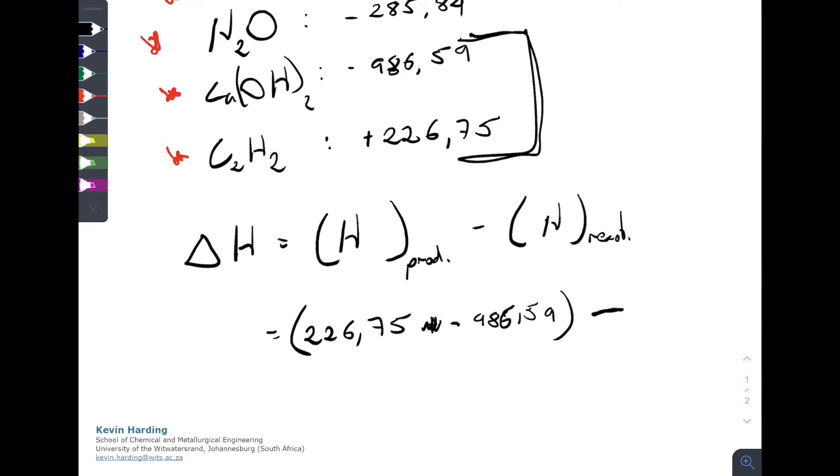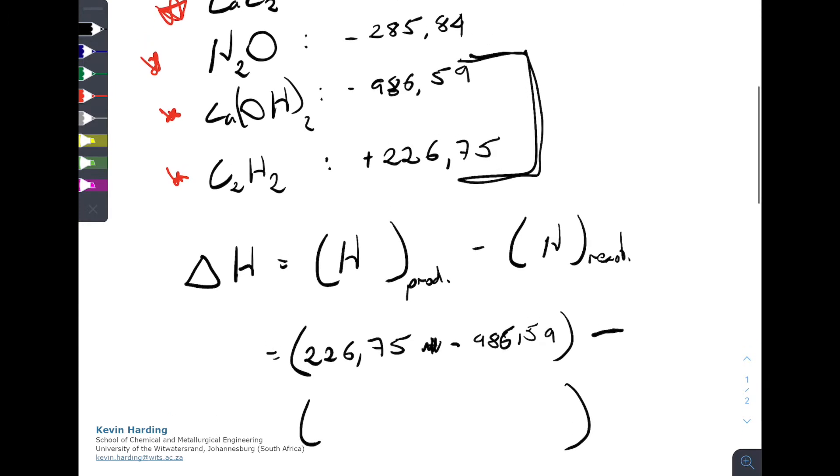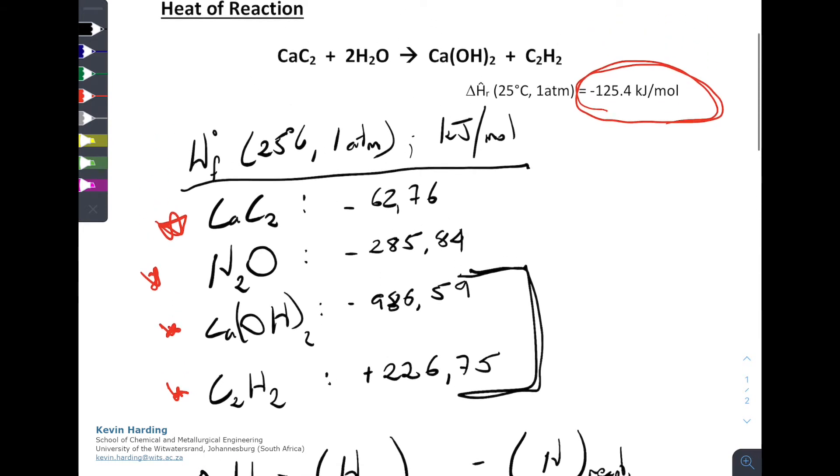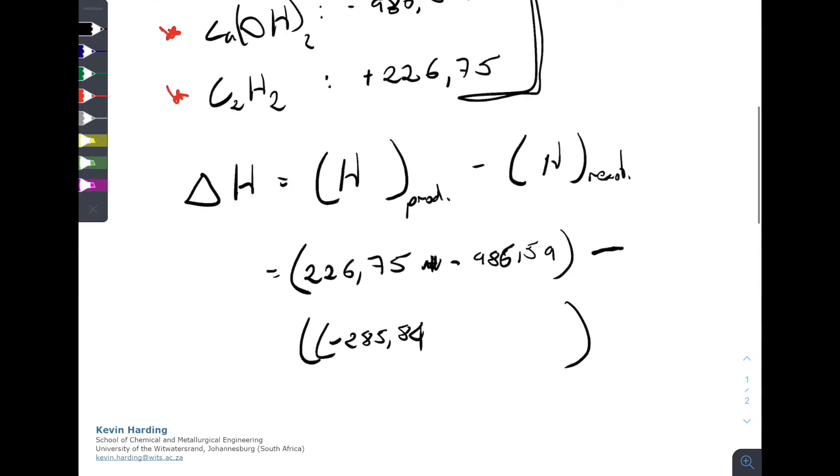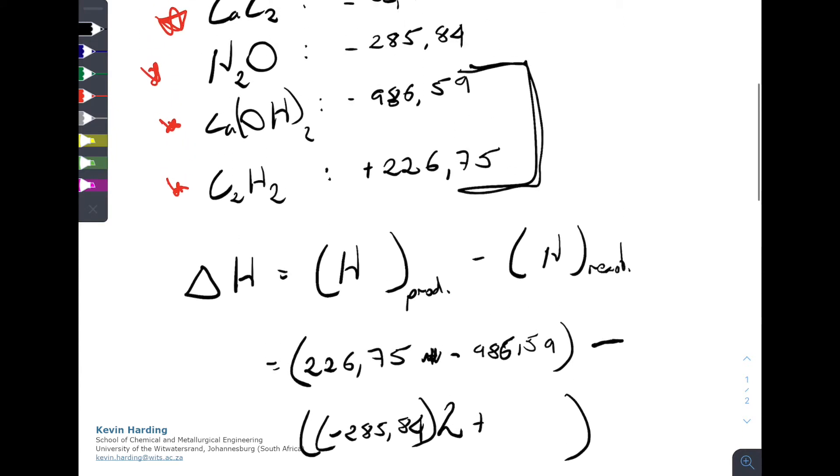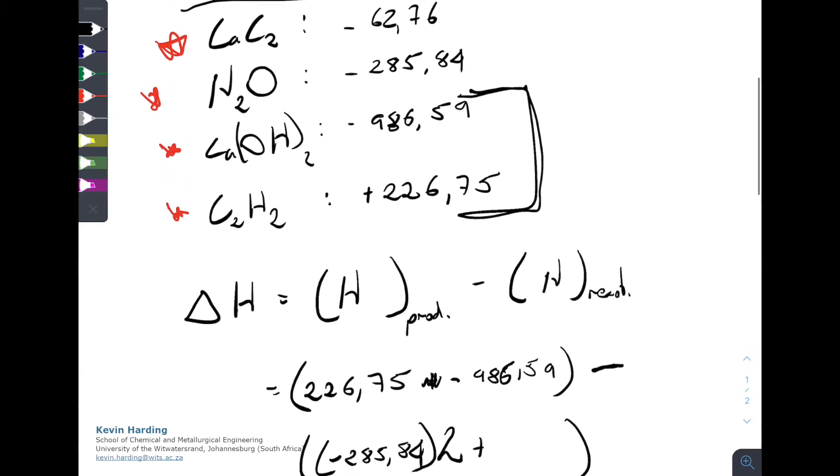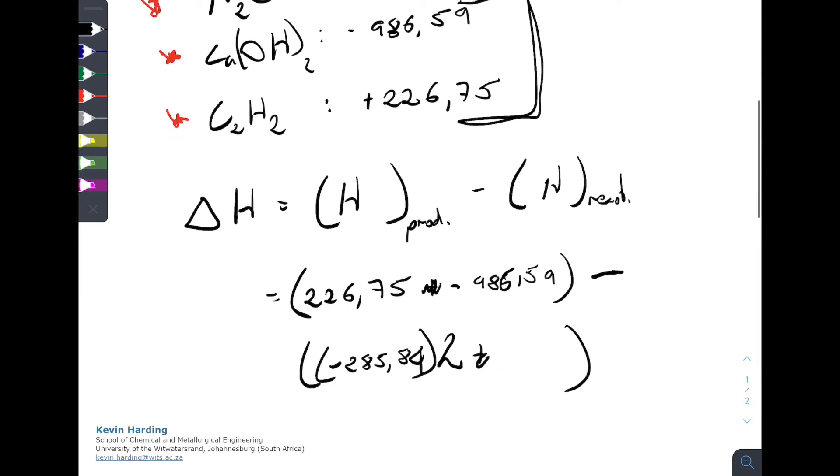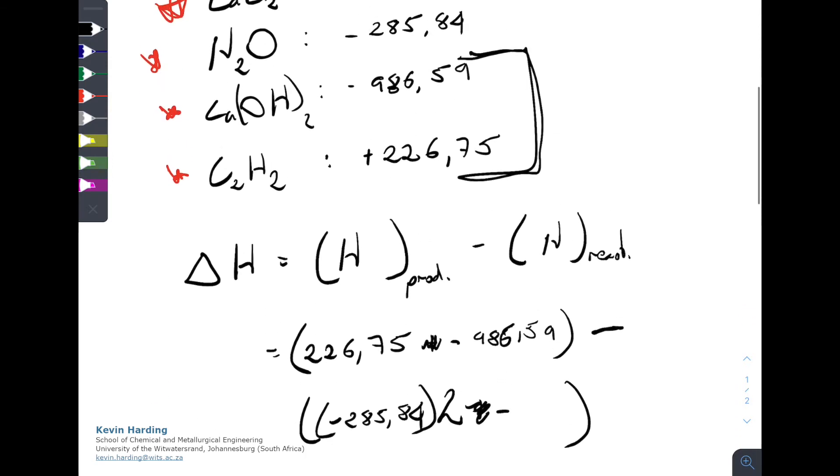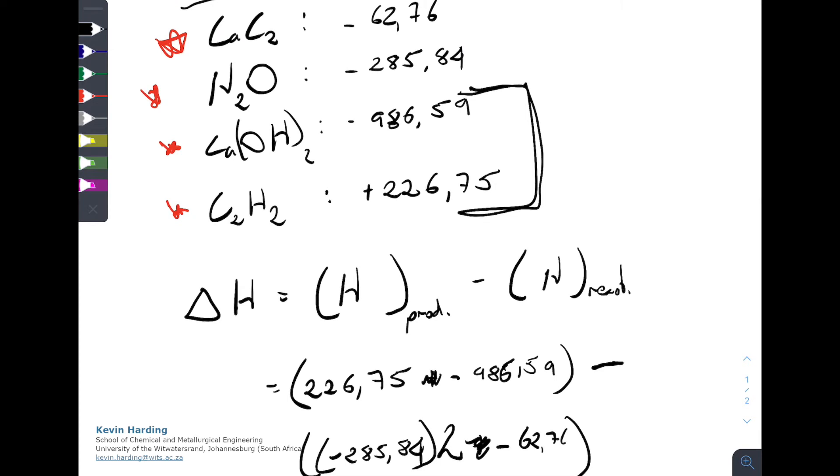We are then going to subtract the reactants, and that is the water, which is minus 285.84. But I need to remember that up at the top here, we had that the water, there were two waters in this reaction. So I need to multiply this value by two, and then I need to add to that the calcium carbide value of minus 62.76.